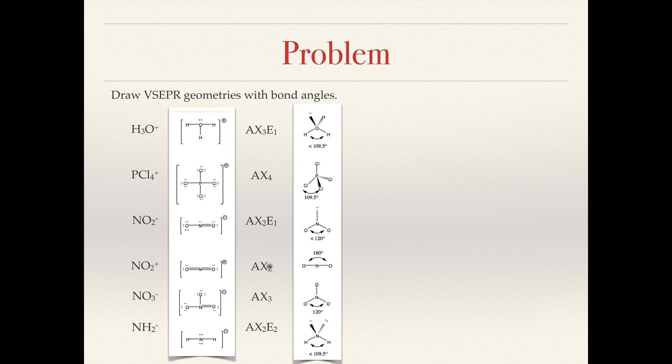Again, in these examples here, the electron group geometry is the same as the shape because there are no lone pairs on the center atom. Here for NH2- AX2E2, four electron groups based on a tetrahedron or tetrahedral structure. However, we name the molecule as if the lone pair doesn't exist. So this would be bent with an angle that's less than 109.5 degrees.